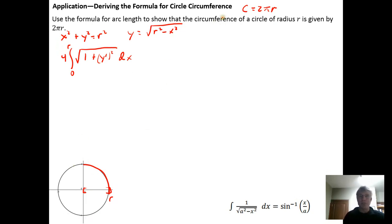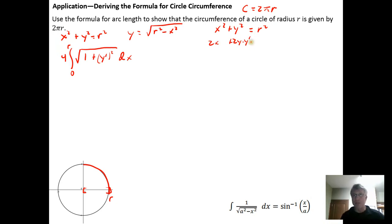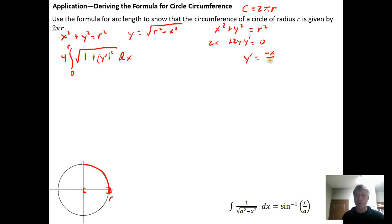The derivative is easiest obtained from the implicit form. Given x squared plus y squared equals r squared, differentiating with respect to x gives two x plus two y times y prime equals zero. Solving for y prime: subtract two x from both sides and divide by two y, giving y prime equals negative x over y.